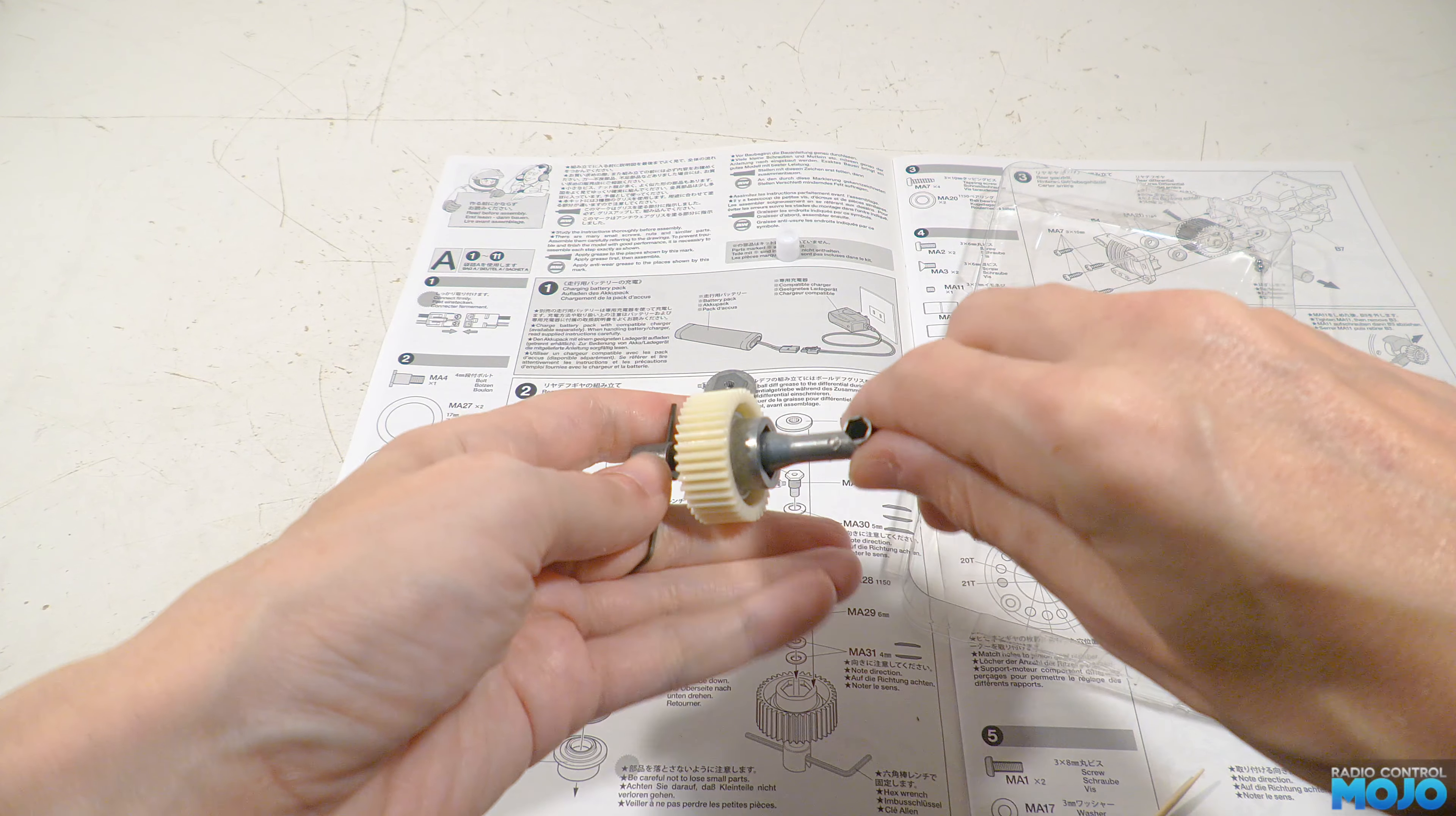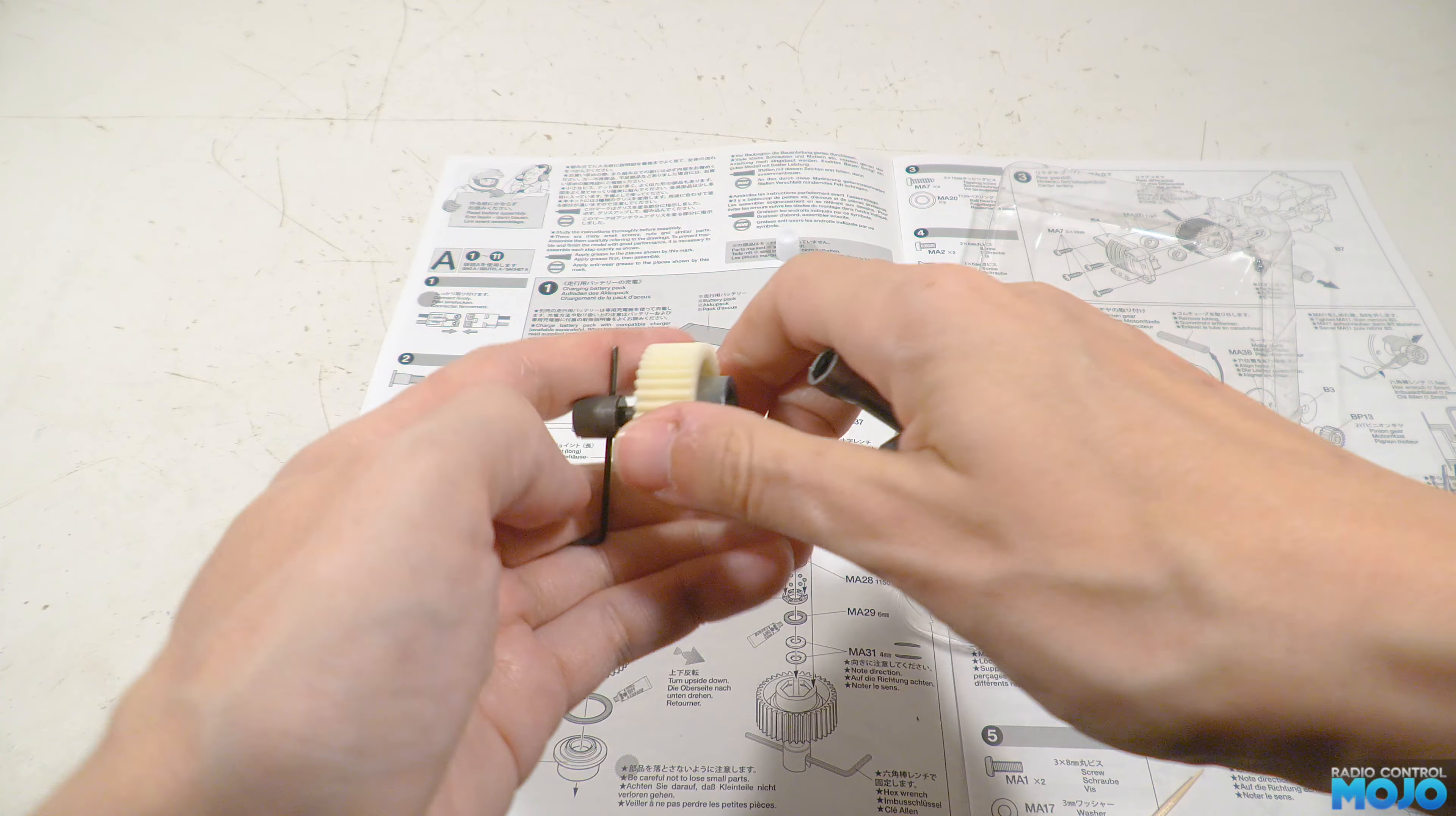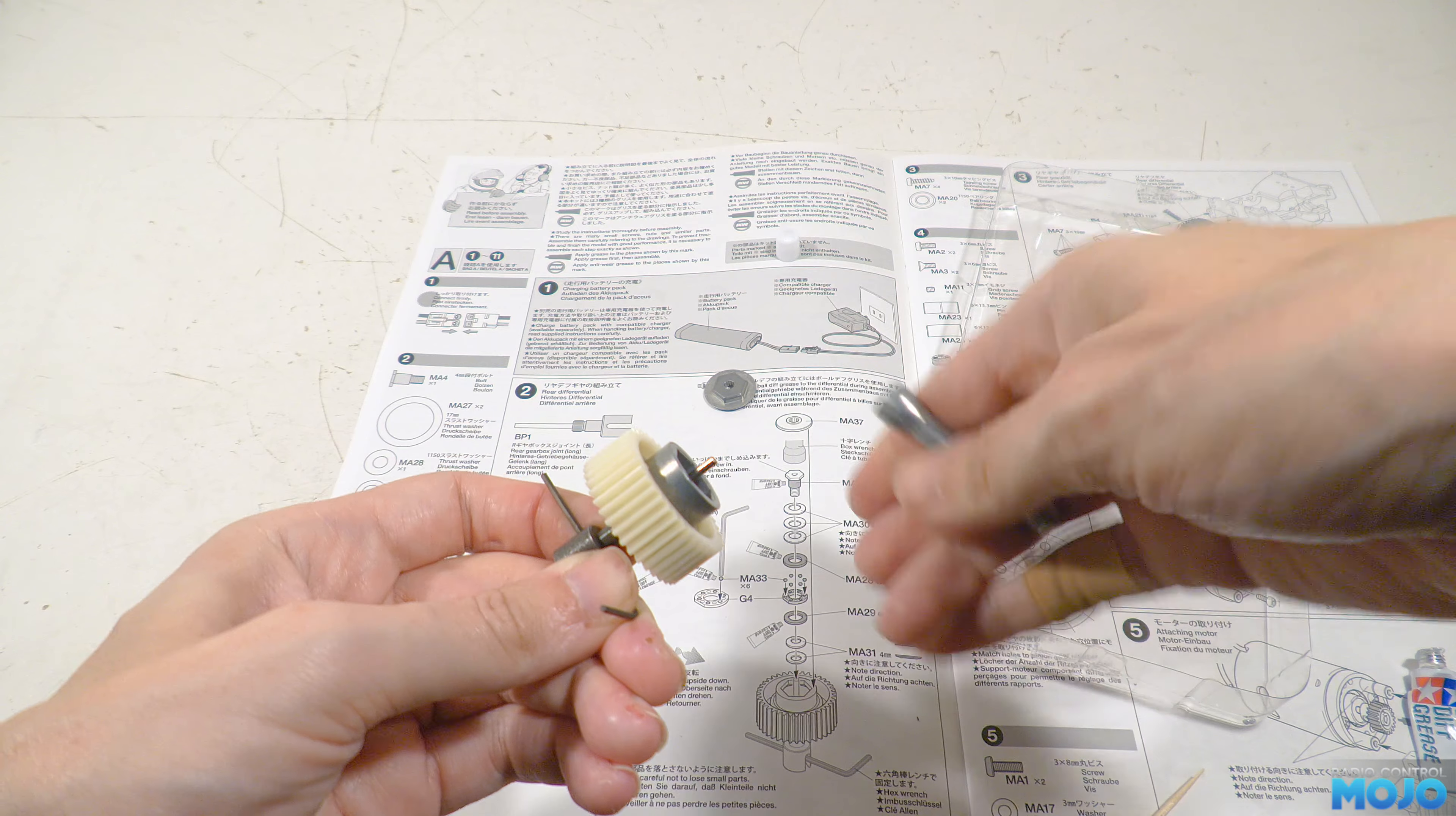Now this diff is non-adjustable, so we need to tighten the screw all the way until it reaches the end of the threads. Having said that, it might just be possible to add a shim to loosen the diff a little, but it's really not designed to be adjustable. It's very much a fit-and-forget setup.